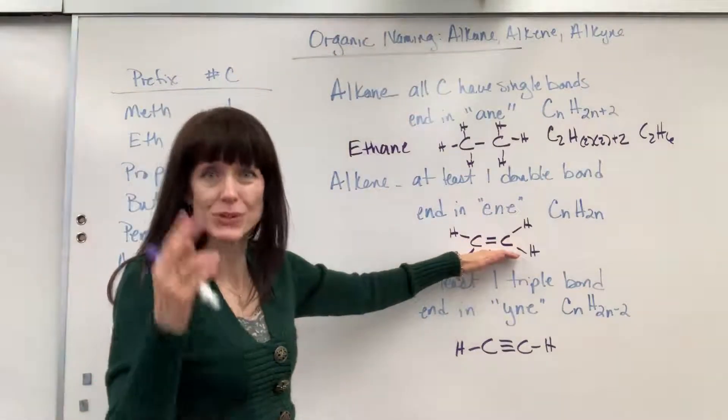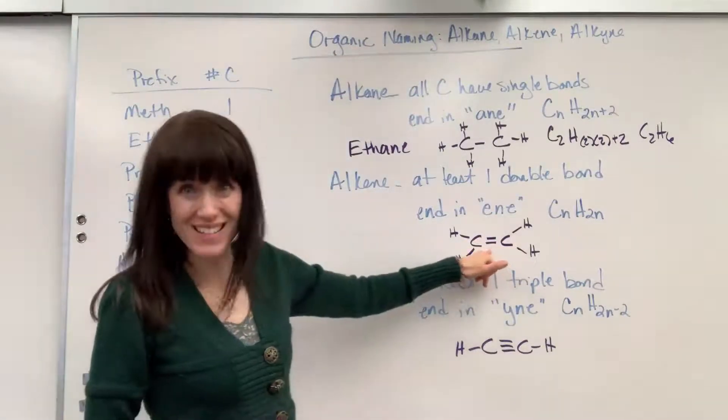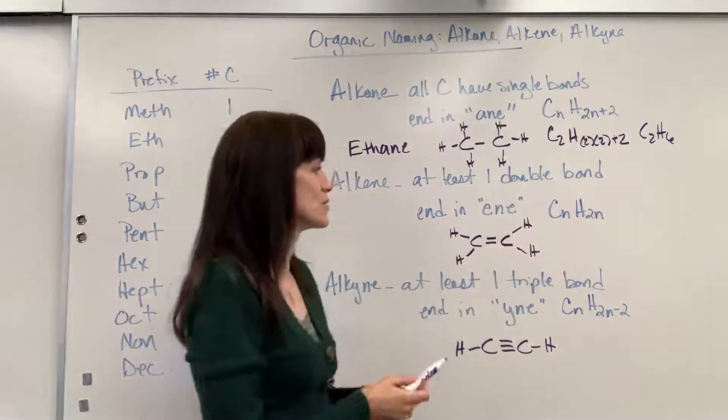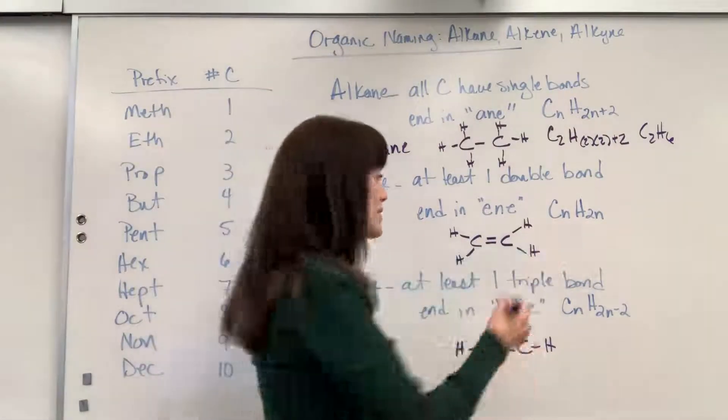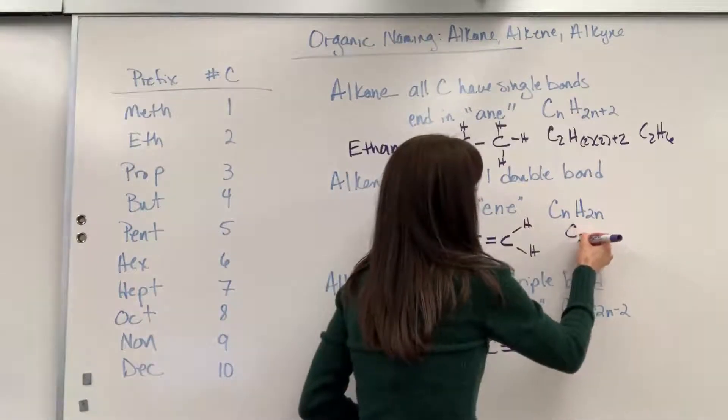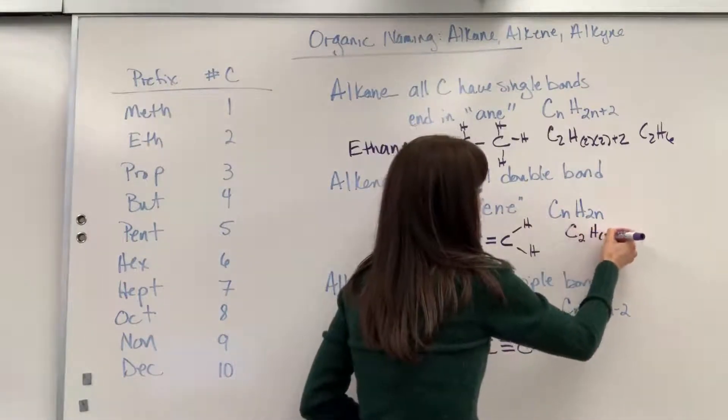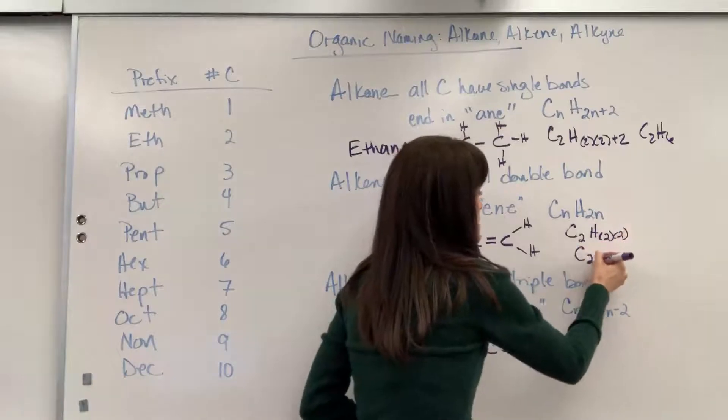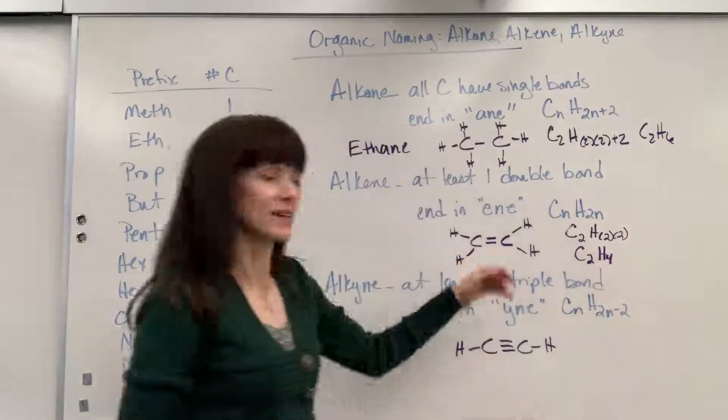So here I have, again, for the same example, two carbons, but now there's a double bond. So I have 1, 2, 3, 4 hydrogens. Check out this math over here. You've got your carbon, two of those. Hydrogen, you take two times the two carbons, is going to give me C2H4, and there it is.